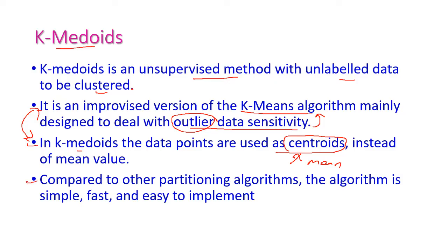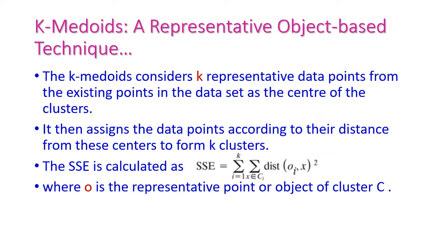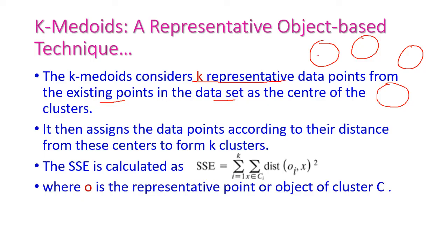Compared to other partitioning algorithms, the k-medoids algorithm is very simple, fast, and easy to implement. It considers k representative data points from existing points in the dataset as the center of each cluster. For example, if we have four clusters, it will randomly assign four data points as cluster centers. Instead of computing the mean, it assigns an actual data point as the center.